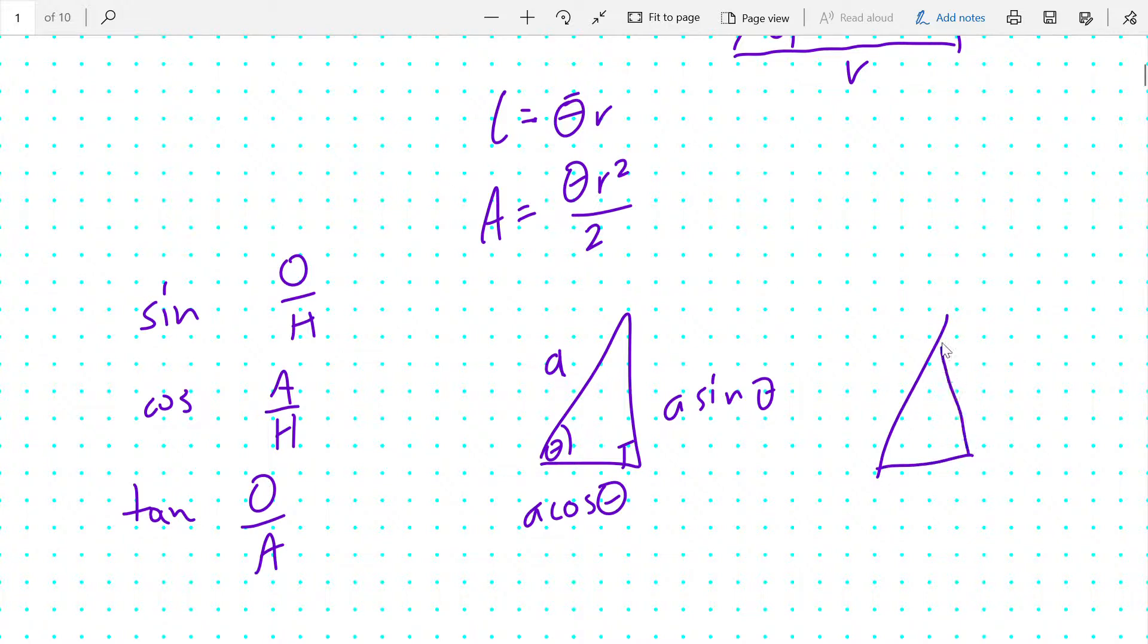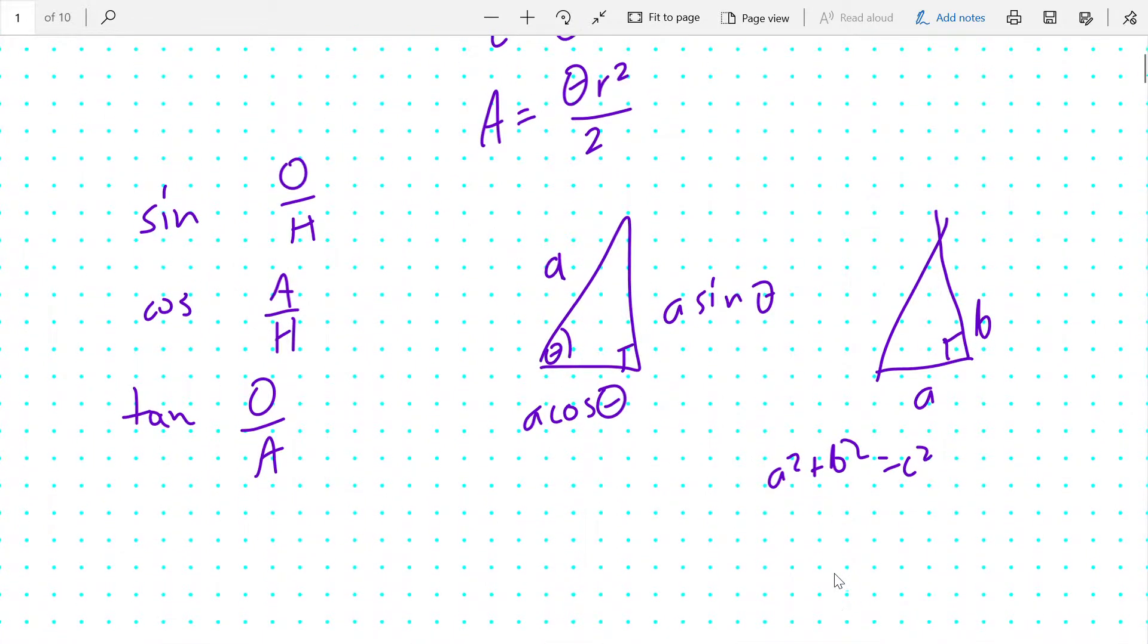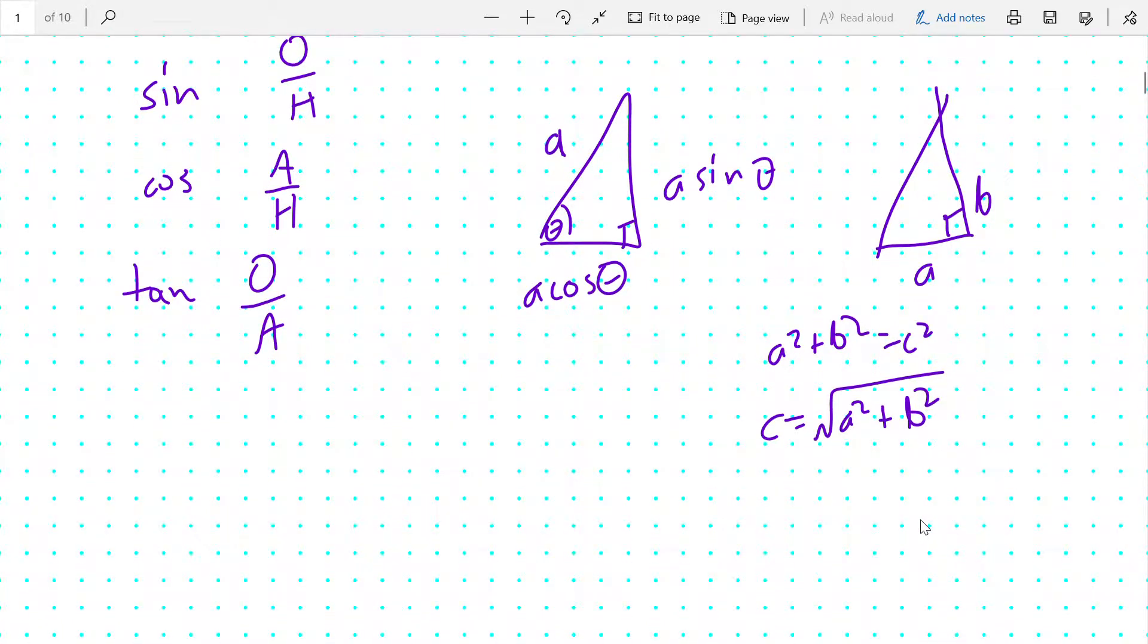When you know two sides of a right-angled triangle, such as a and b, you can find the third side by using Pythagoras' theorem that a² + b² = c². Alternatively, c is equal to the root of the sum of the squares of a and b.